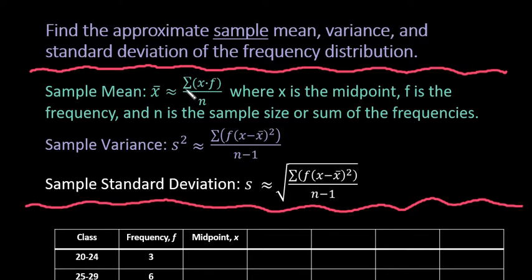For this video, what I want to do is show you how to find the approximate sample mean, sample variance, and sample standard deviation of the frequency distribution. The reason we say this is approximate is because we don't know the actual data, we just know the counts in each class. So just to review how to do this, and your formulas might look slightly different, but they are essentially the same thing.